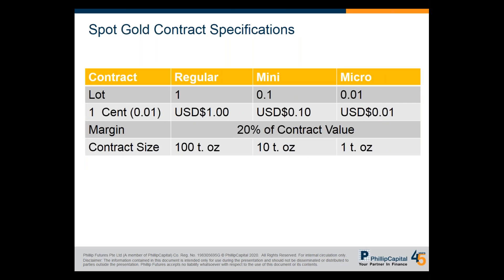On top of spot forex, there is also spot gold. Gold is a safe haven asset. For gold, the smallest size is 0.01 lot, which equals one troy ounce. The margin for gold is 20% of the contract value, and for a 0.01 micro lot, every one cent movement in gold equals one cent in P&L. One troy ounce is 31.1035 grams — just note that it is different from a regular ounce.